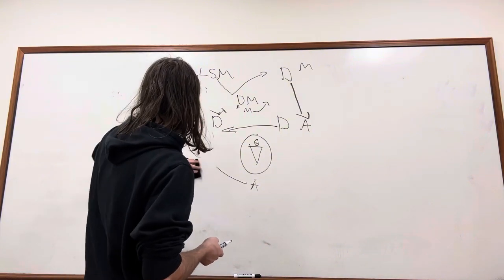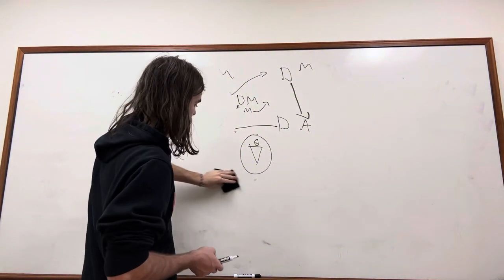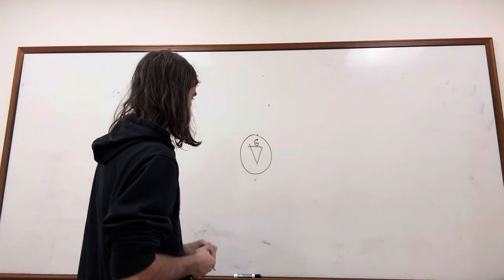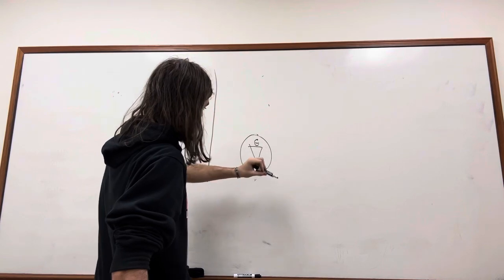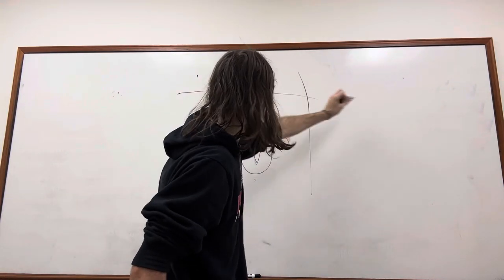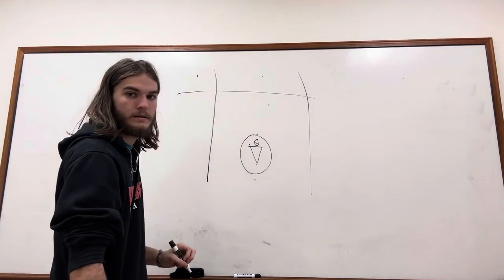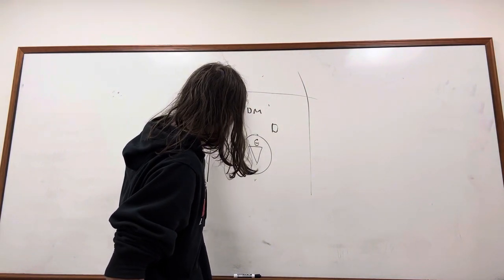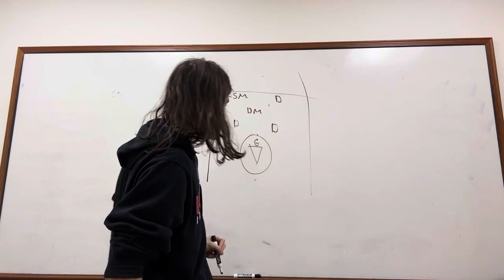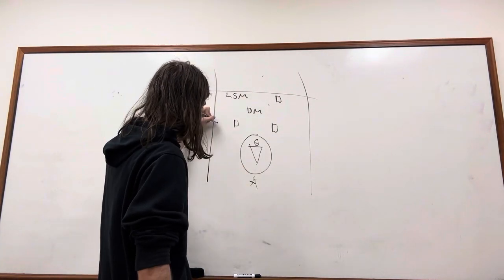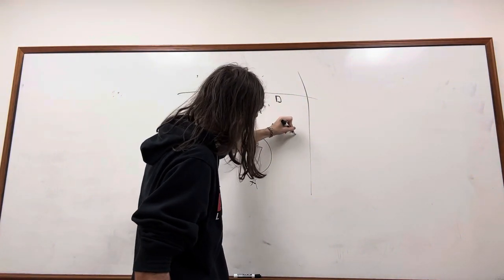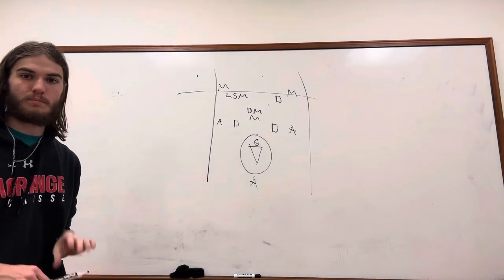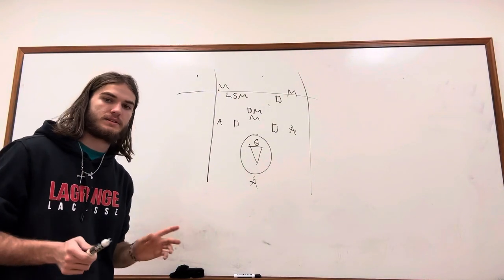Now an important thing to keep in mind when running this defense is you've got to stay in. You cannot get drawn out. So let's say this is a football field, right? You've got, say, these are your hashes. That's the box. So you've got your defense, defense, D-midi, LSM, and D-midi. You've got your guide attack, you've got your guide attack, guide attack, midi, midi, midi. It's important to stay in your spots. That's really the key.